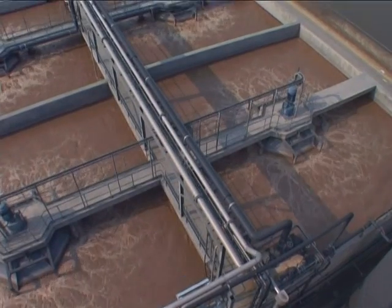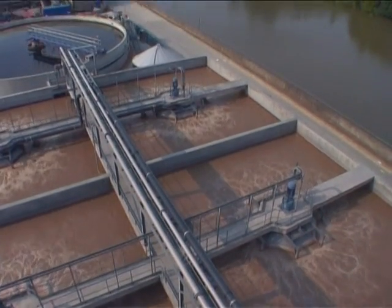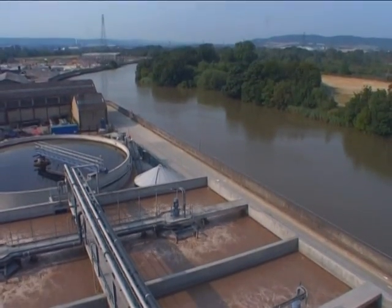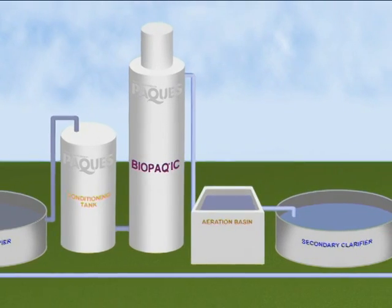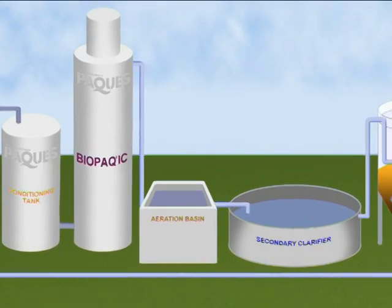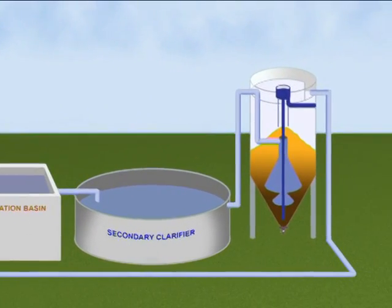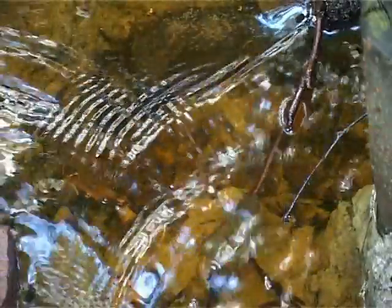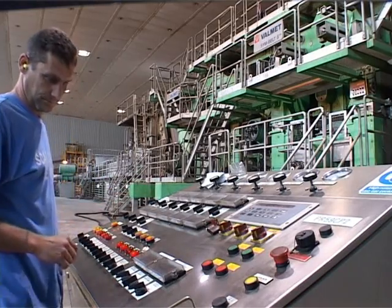The effluent of the Biopac IC can be treated to remove the residual pollution with the aid of conventional aerobic technology. If necessary, the effluent can be treated afterwards by tertiary means in an AstraZand filter and can be discharged without problems in surface water or reused in the production process.